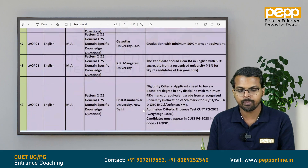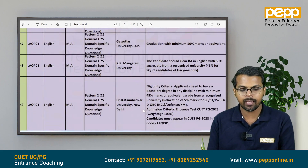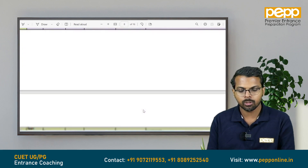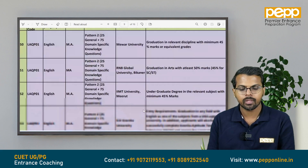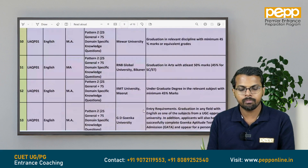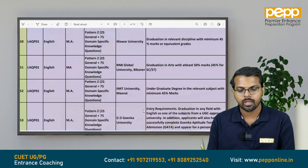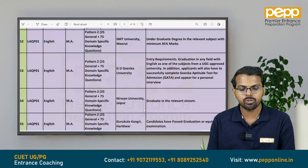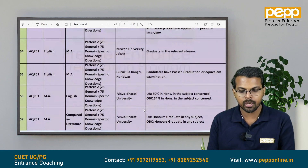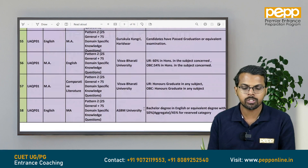KR Mangalam University. Dr. BR Ambedkar University, Delhi. Mewar University. R&B Global University, Bikaner. IIMT University, Meerut. GD Goenka University. Nirvana University, Jaipur. Gurukula Kangri, Haridwar. Vishwabharati University, West Bengal.